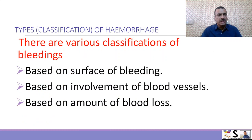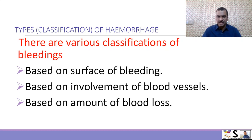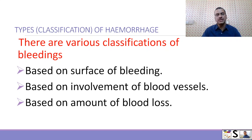Now we come to the classification of hemorrhage. There are many types of classifications, but mainly there are three: number one, based on surface of bleeding; number two, based on involvement of blood vessel; and number three, based on amount of blood loss.